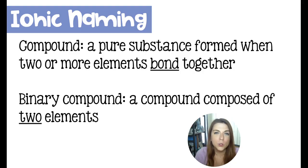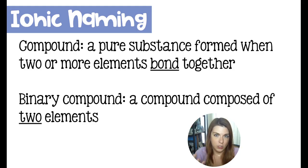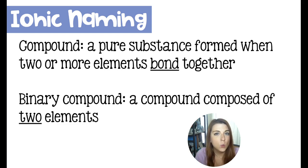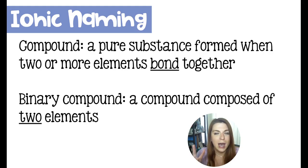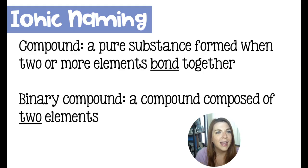A compound is a pure substance which is formed when two or more elements bond together. A pure substance is either an element or a compound with no impurities. An impure substance would be something like salt water — the amount of salt can change. But the compound H2O will always have two hydrogens bonded to one oxygen. That's what makes it pure: the chemical formula is definitive and highly predictable.